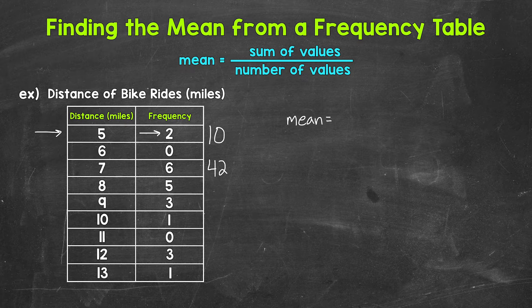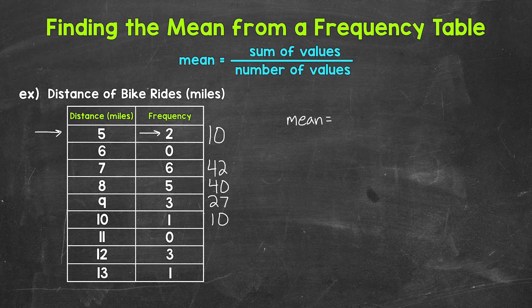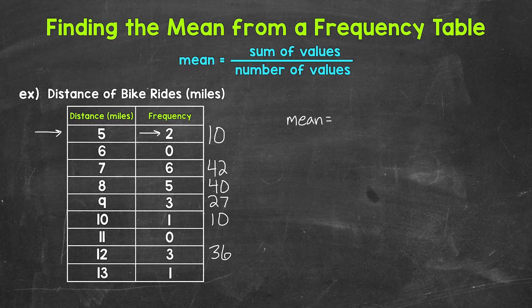Then eight miles occurred five times — that gives us 40. Nine miles occurred three times — that gives us 27. Ten miles occurred once, so that gives us 10. Then 11 miles didn't occur at all, so we don't need any 11s. Then 12 miles occurred three times — that gives us 36. And then 13 miles occurred once. So instead of writing out each individual value, we can use the frequency table to combine values.